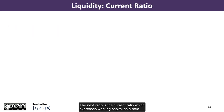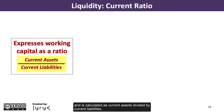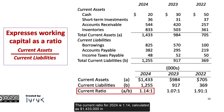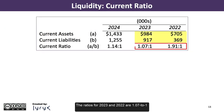The next ratio is the current ratio, which expresses working capital as a ratio and is calculated as current assets divided by current liabilities. The current ratio for 2024 is 1.14, calculated as $1,433,000 in current assets divided by $1,255,000 in current liabilities. The ratios for 2023 and 2022 are 1.07 to 1 and 1.91 to 1 respectively, calculated the same way.